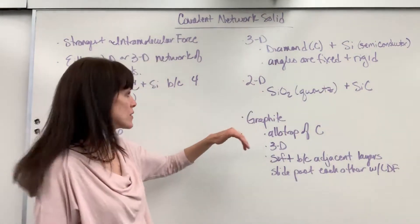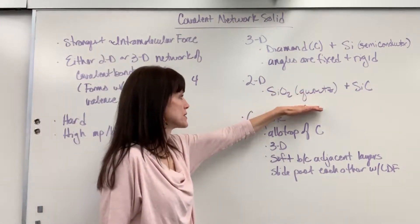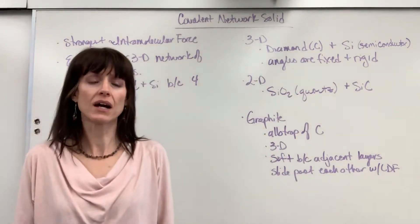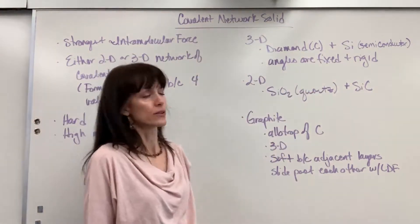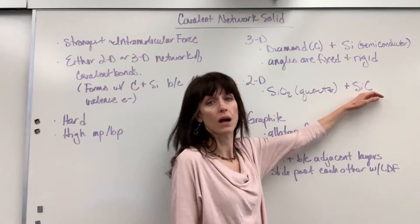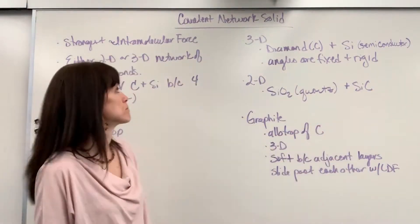We also have a 2D structure. Very common example, quartz, silicon dioxide. You might have some quartz somewhere in your house, and that is a covalent network structure. We also have silicon carbide, which is going to be a covalent network.